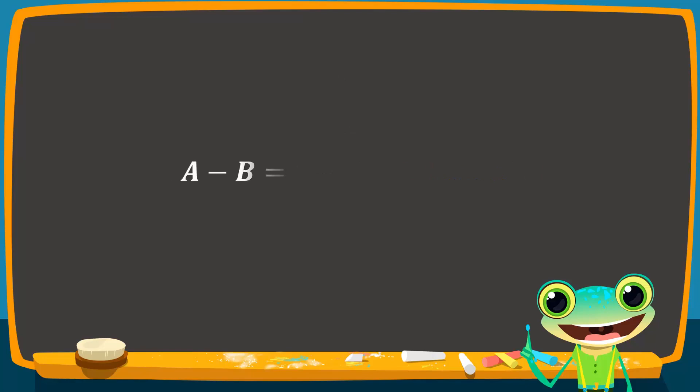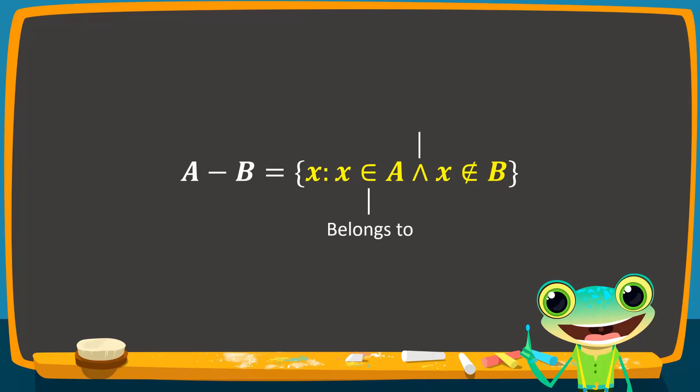In the set builder notation, A difference B can be written as: X such that X belongs to set A and X does not belong to set B.